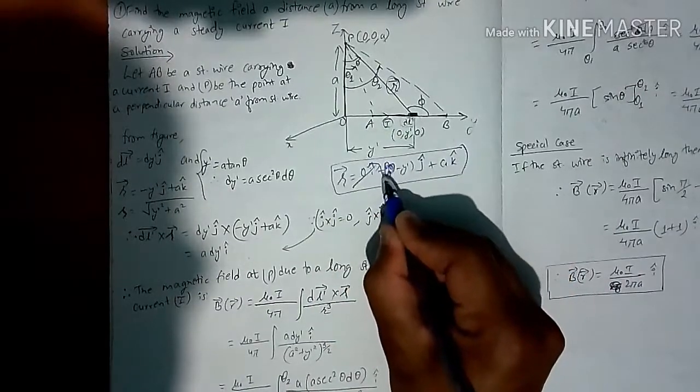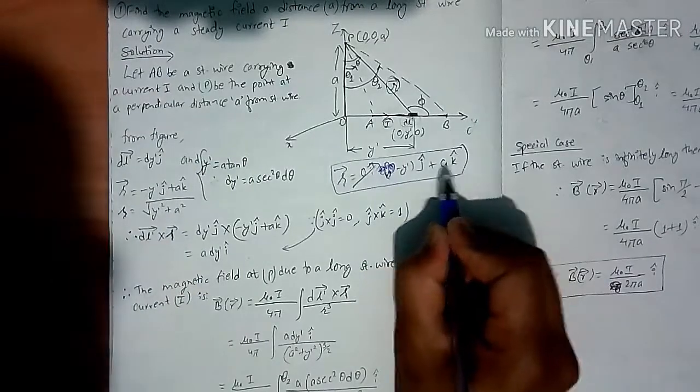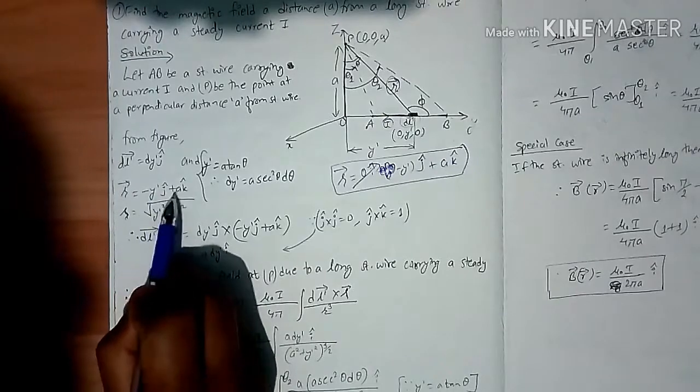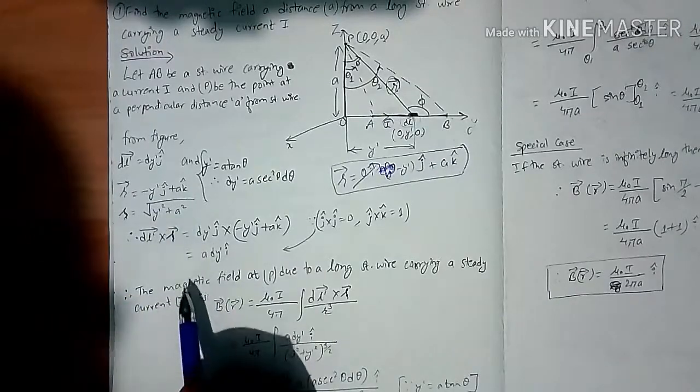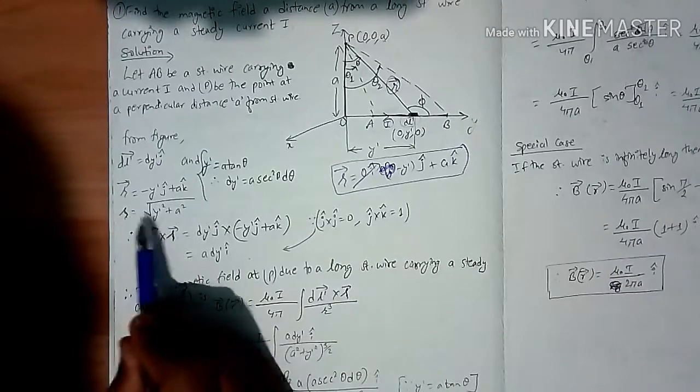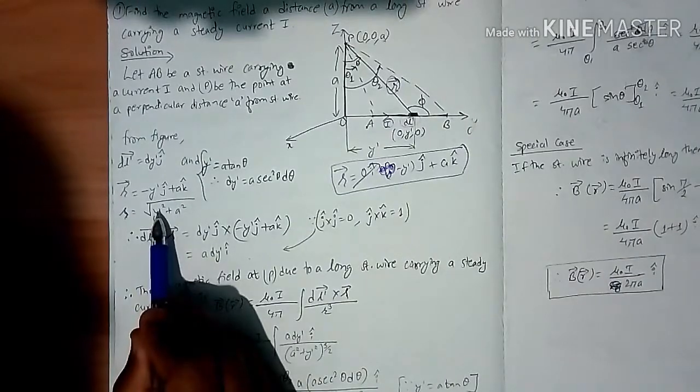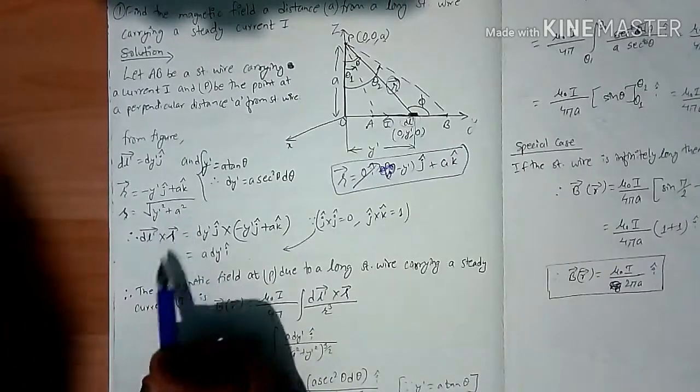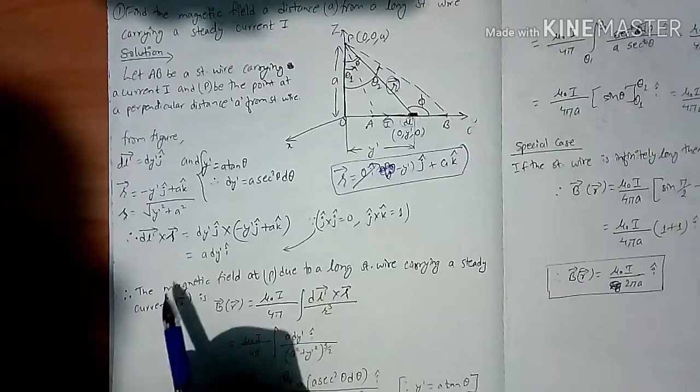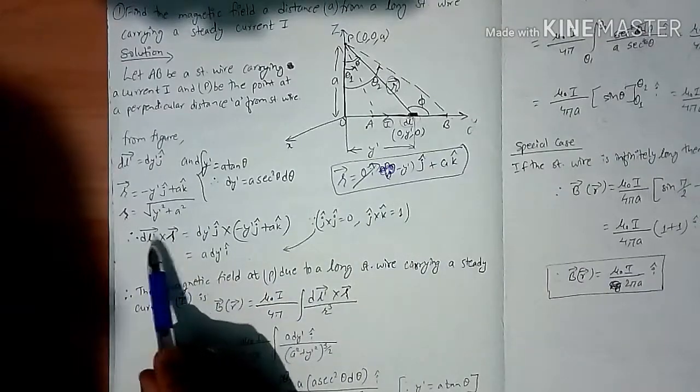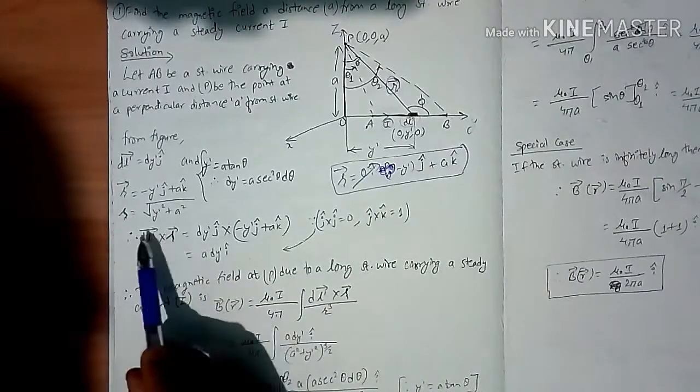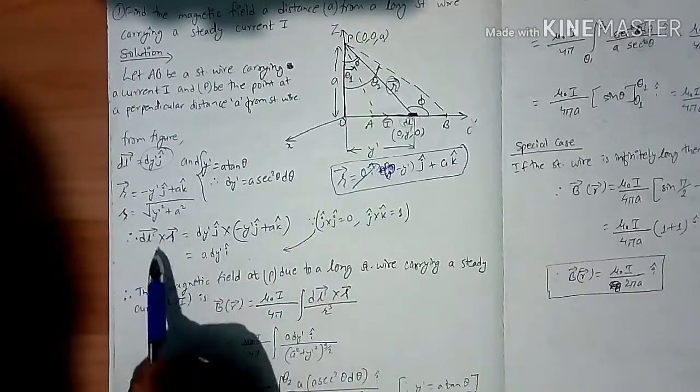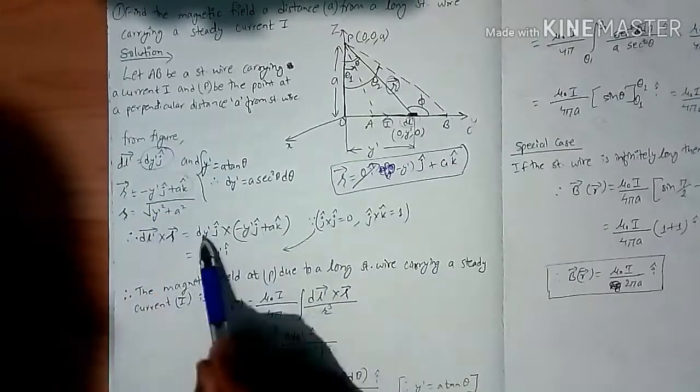Minus i cap by j cap, plus a k cap. The magnitude, the route is a squared plus y' squared. Well, for my case, I use a thumb like dL cross R. DL when I go to the wire cross R, when I go to the wire.